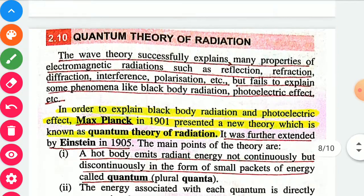Next topic is the quantum theory of radiation. Quantum theory of radiation was given by Max Planck in 1901 and further extended by Einstein in 1905. The wave theory successfully explained many properties of electromagnetic radiation like reflection, refraction, diffraction, interference, and polarization, but fails to explain some phenomena like black body radiation and photoelectric effect. To explain black body radiation and photoelectric effect, Max Planck as well as Einstein gave their postulates.